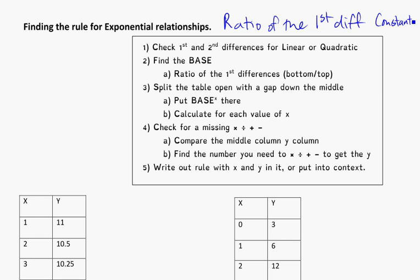Like in a linear equation or linear pattern, you have your first difference that's constant. In a quadratic, it has the second difference that's constant. For an exponential, it's a ratio of the first difference that's constant. I'll show you what the ratio means and how this all works out.